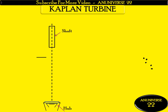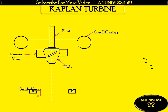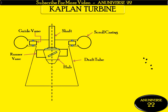This is the shaft to which the hub of the turbine is attached. This is the hub. These are the vanes on the runner, which vary from 3 to 6. This is the scroll casing — these are the main parts of the Kaplan turbine. These are the guide vanes, which guide the water from the casing towards the runner vanes. And this is the draft tube, which is used only in a reaction turbine, as in the Kaplan or Francis turbine, showing the path for water to discharge towards the tailrace.